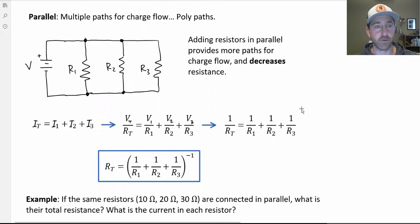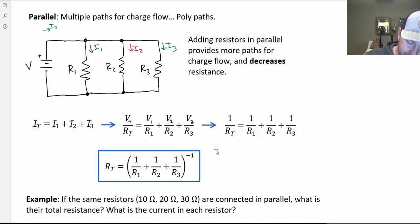For parallel, it's not so straightforward. If we calculate the current in each resistor, I could say there's some current I1 passing through R1, current I2 passing through R2, and current I3 passing through R3. And each of those currents have to be supplied by the battery. So I've got charge flow leaving the battery, I3, I2, and I1.